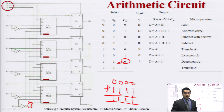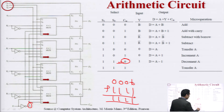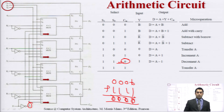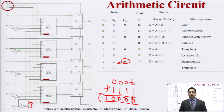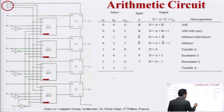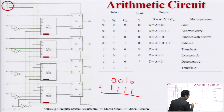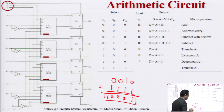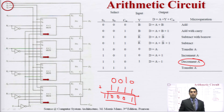Some students confuse this with a complement circuit, but it is not. This circuit decreases the value by one. For example, if the input is 0001, the output is 0000. If the input is 0010, adding 1111 gives 0001 — it acts as a decrementor. If the input is 1111, performing this operation decreases it by 1.